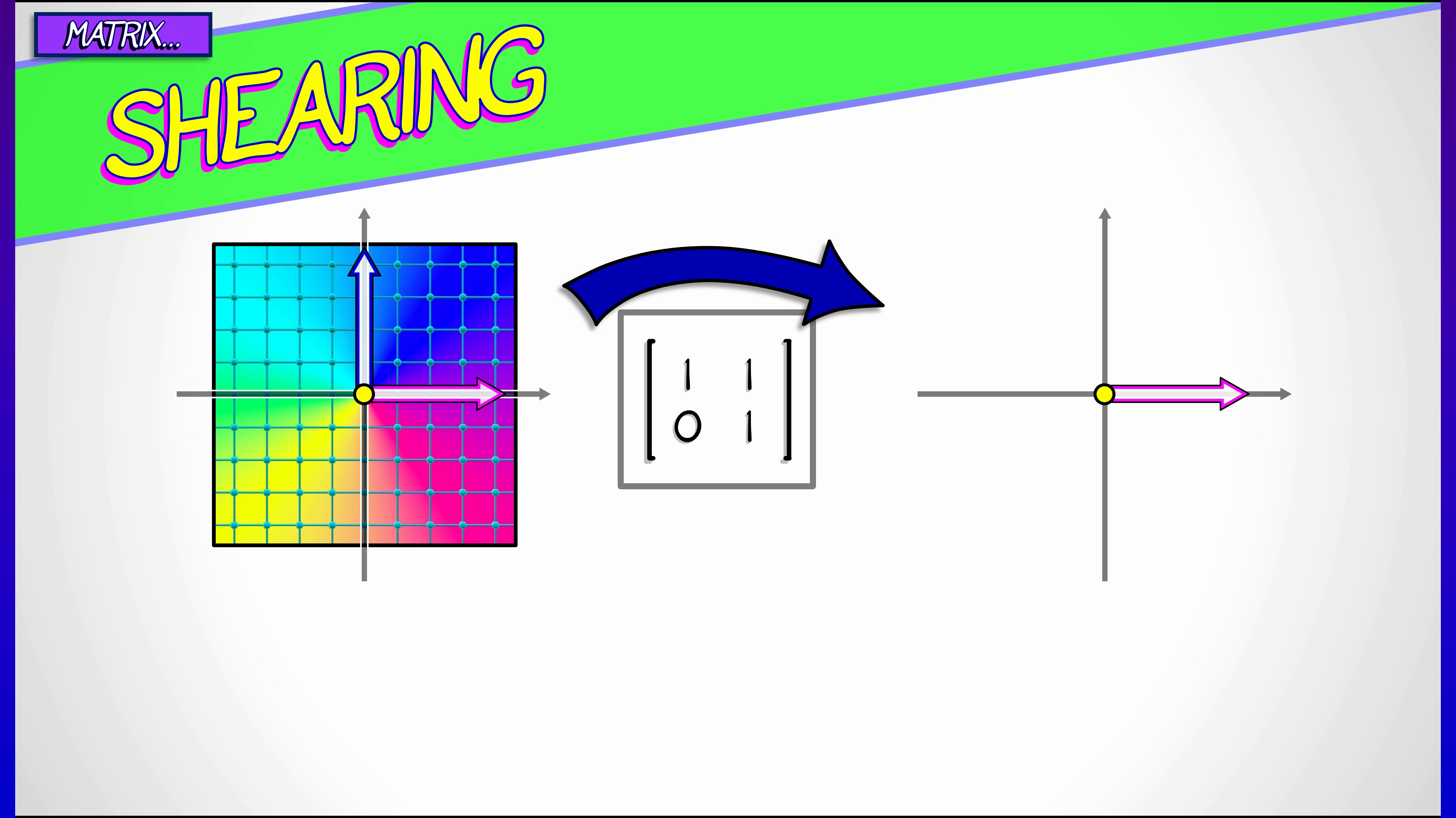What does it do to the vertical? Well, the j vector, 0, 1, gets sent to the second column, 1, 1. That means that the y-axis gets sent to the line where y equals x.